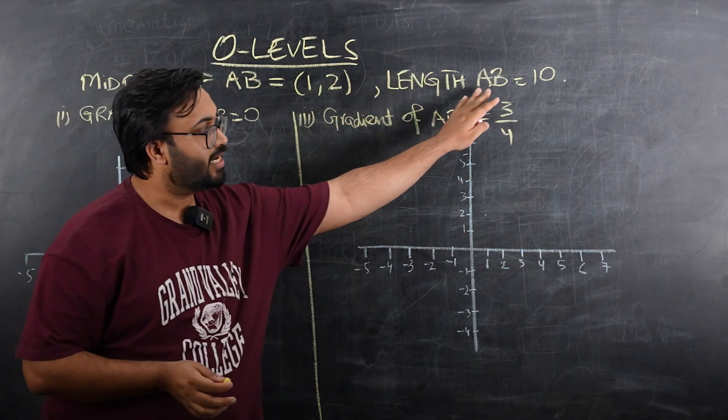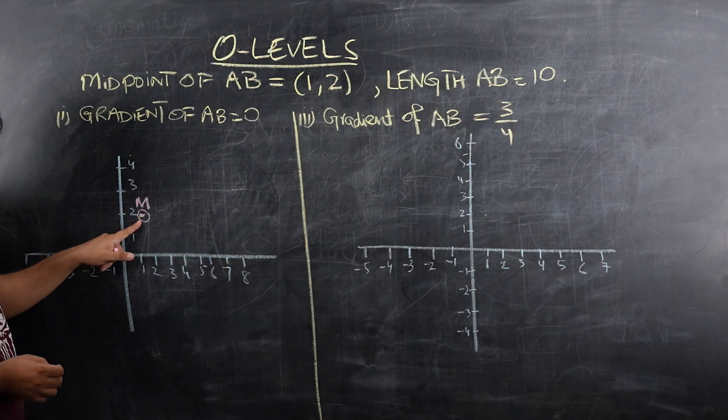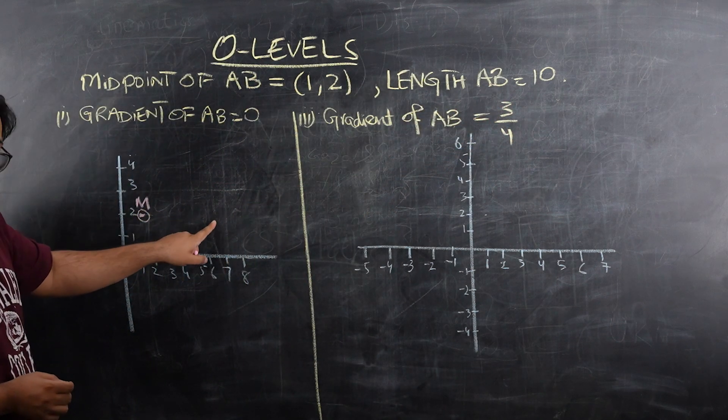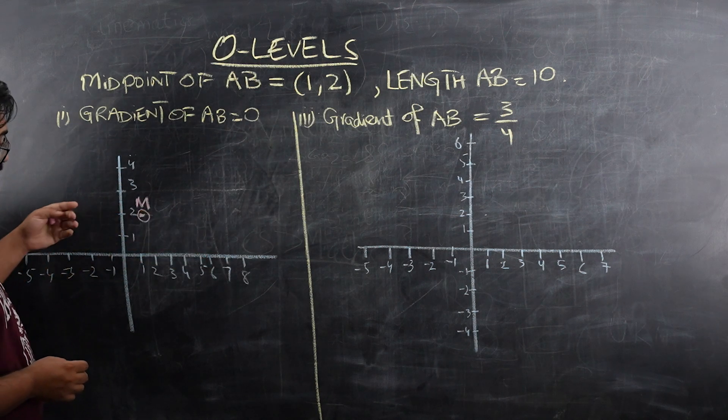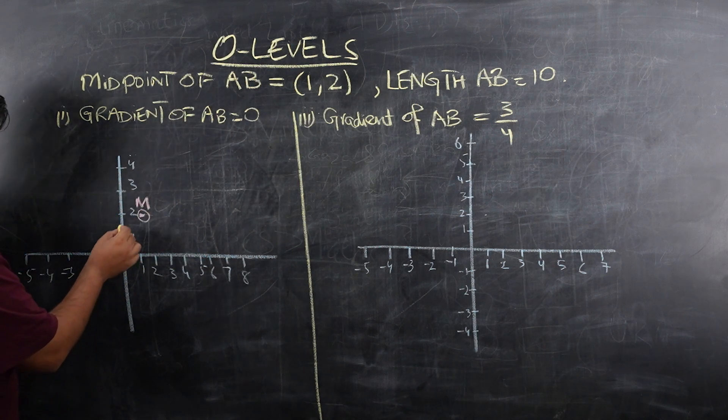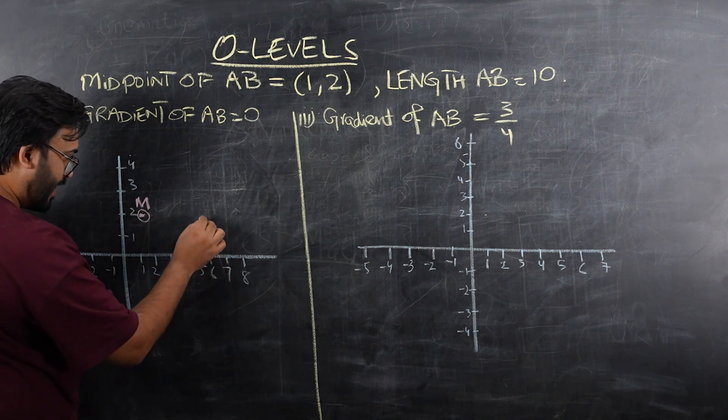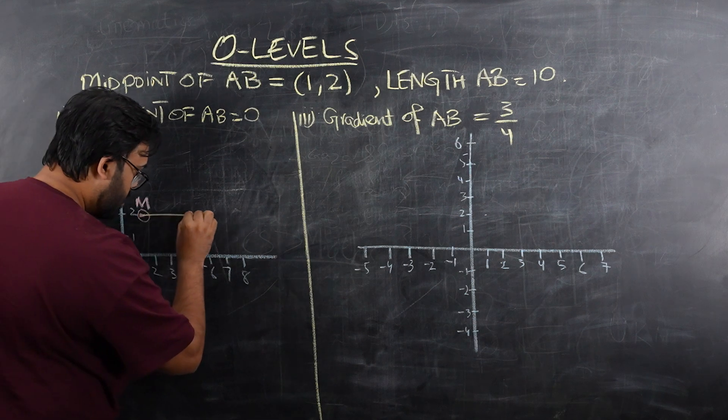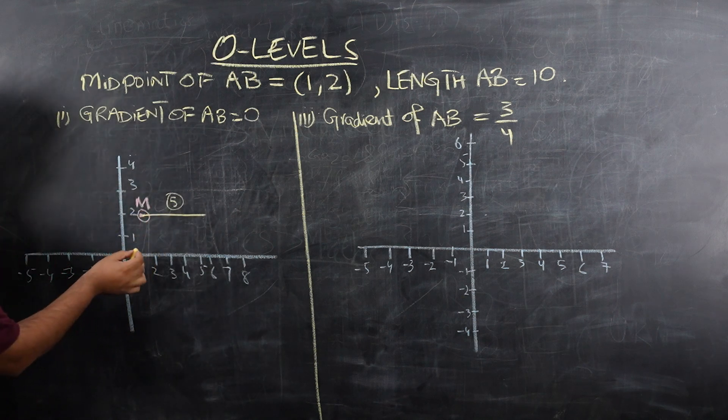Now imagine a horizontal line going through this point. The length of AB is 10, and if this point is the midpoint, that means half of the line is going to lie on the right side and half on the left side. So if I want to make AB as 10, I have to go five units to the right and five units to the left.